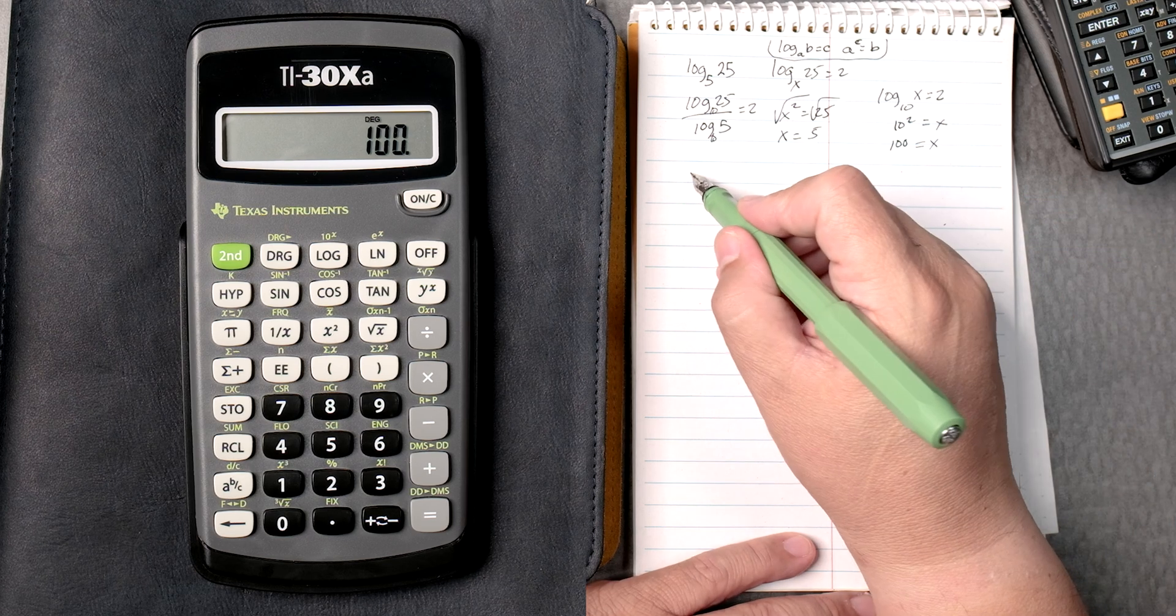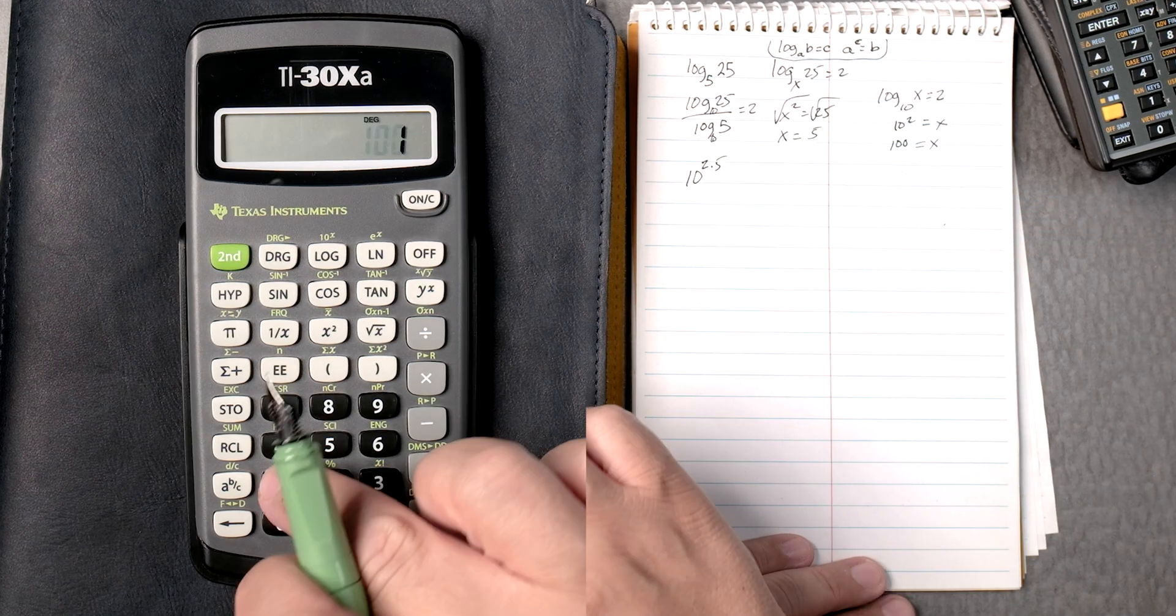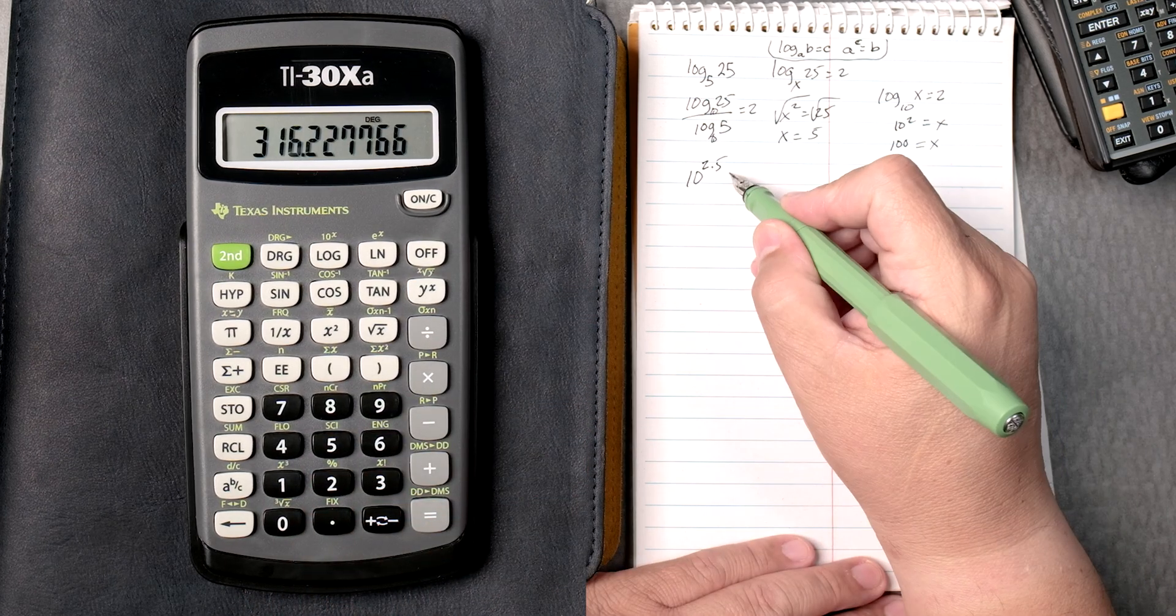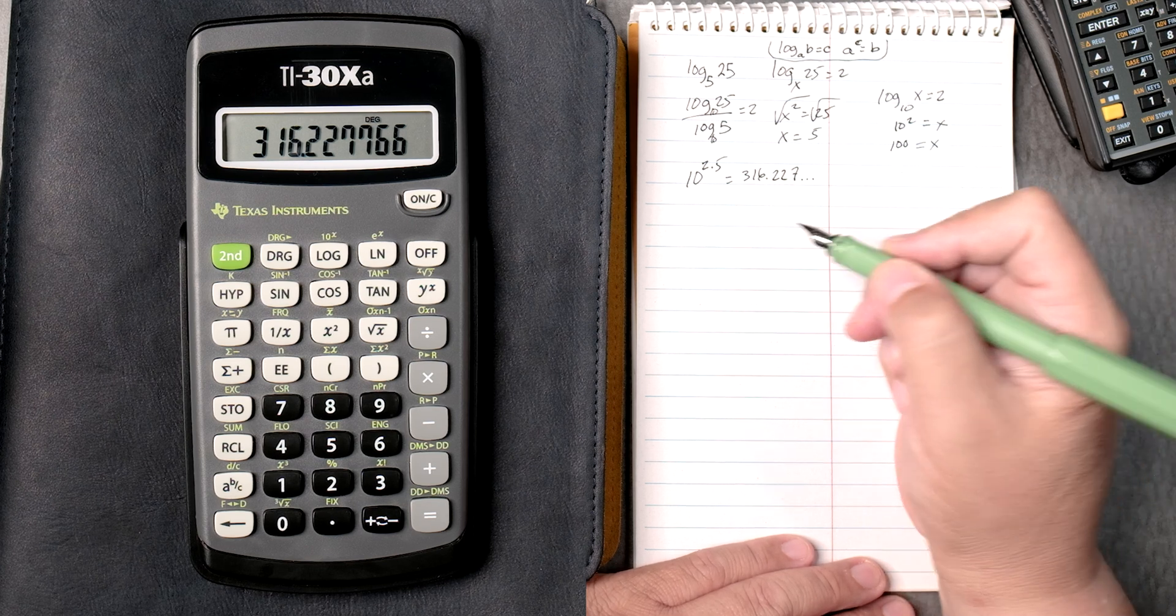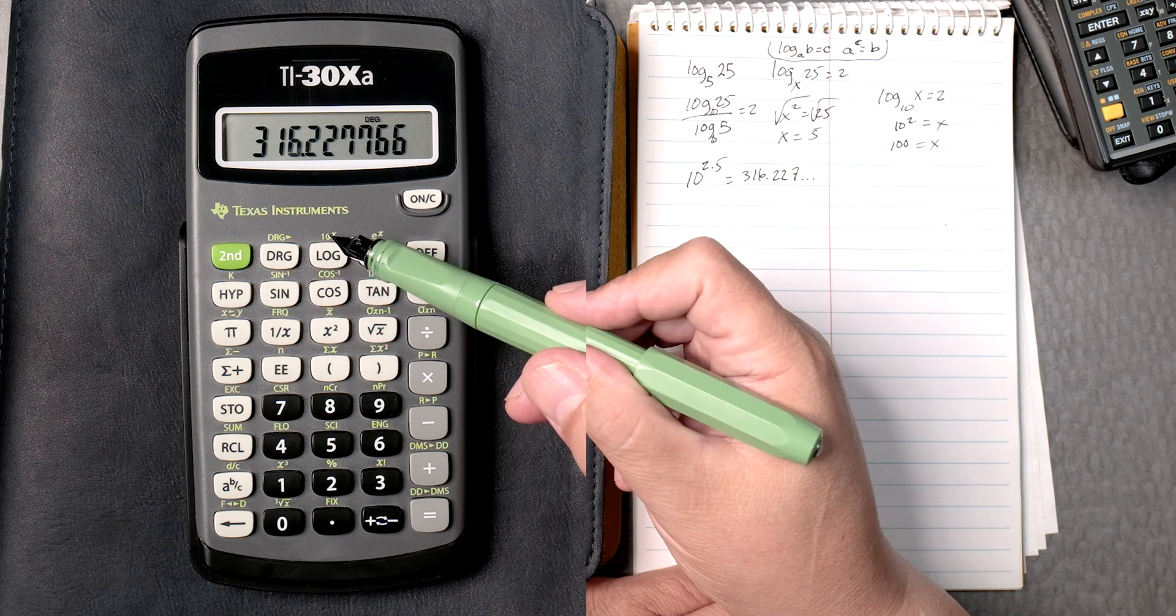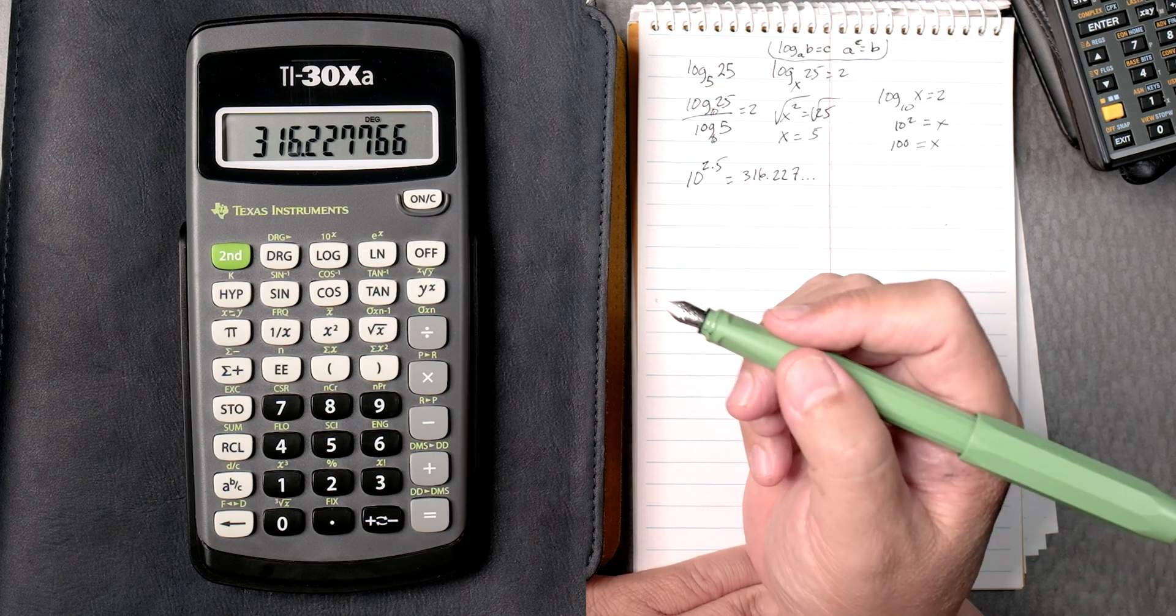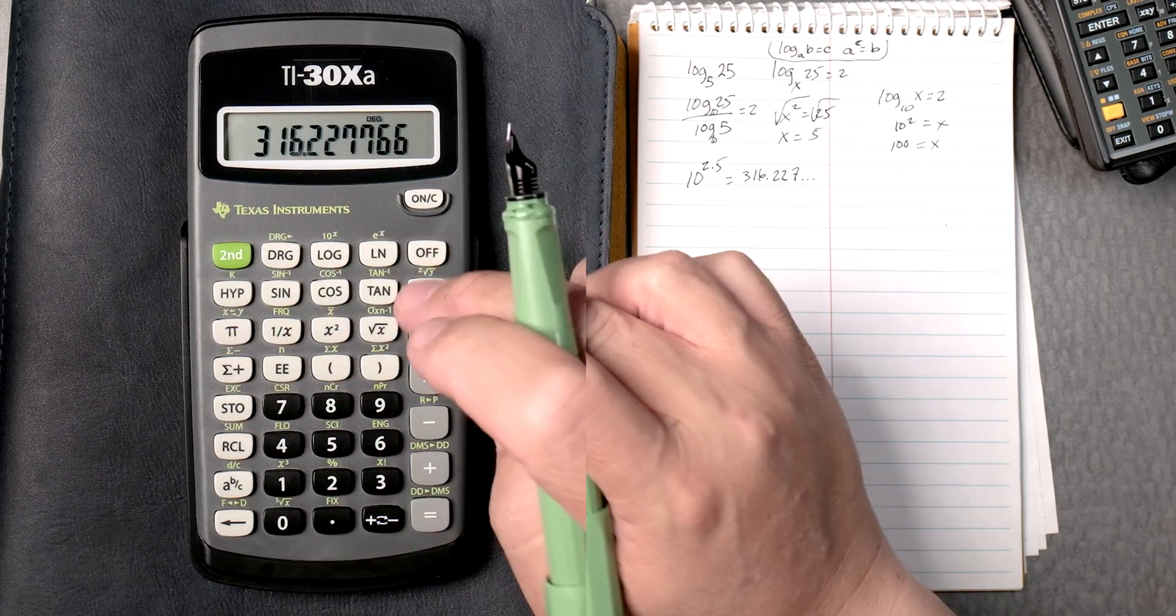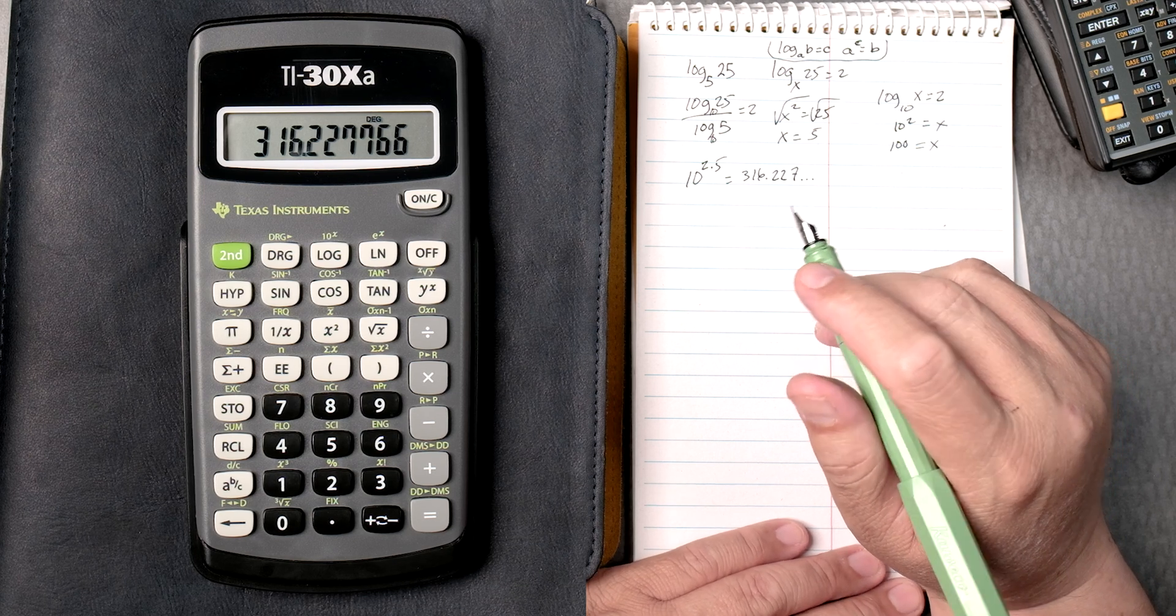Antilogs, 10 to the 2.5, same thing, 10 to the power of 2.5 equals, it gives you 316.227 and so forth. If you look over here, at the log, there's an antilog, 10 to the x. Let's do that. Let's put 2.5, second, log, and it gives you the same answer. Got to press that second button first.